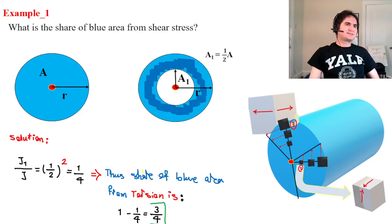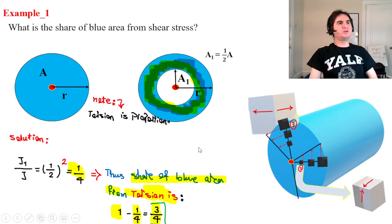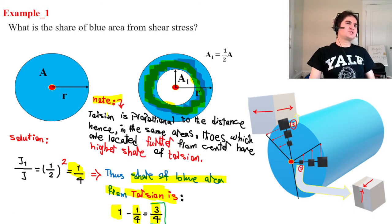One can say share of the rest of blue area, which you can observe here, from torsional torque is 1 minus 1 over 4, that's 3 quarter. And that's an important note that torsion is proportional to distance, and that's again verification of the fact we just reviewed. Torsion is proportional to distance.